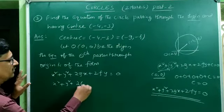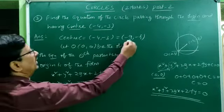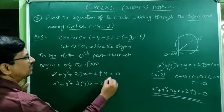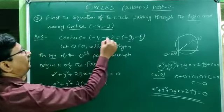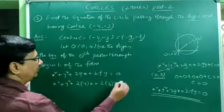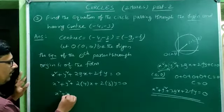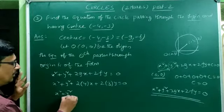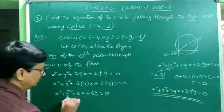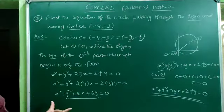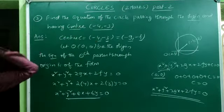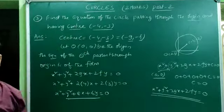Substituting in x² + y² + 2gx + 2fy = 0: with g = 4 and f = 3, the equation becomes x² + y² + 8x + 6y = 0. This is the equation of the circle which passes through the origin and has center (−4, −3).